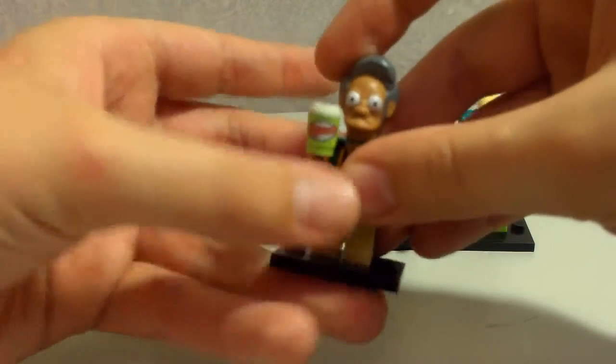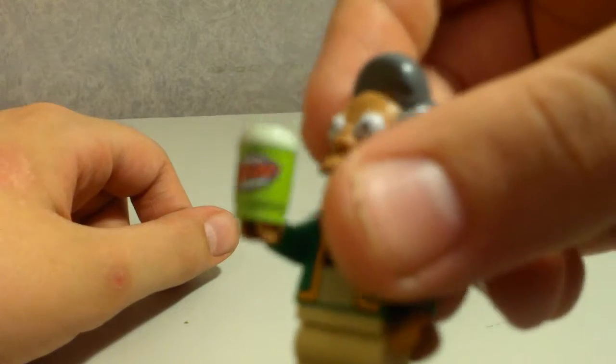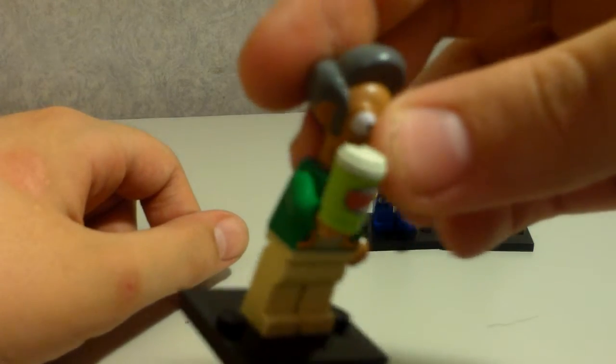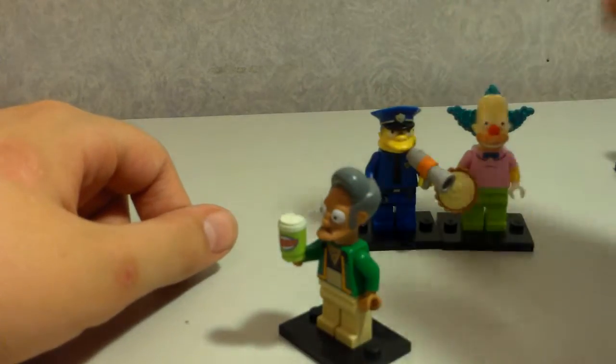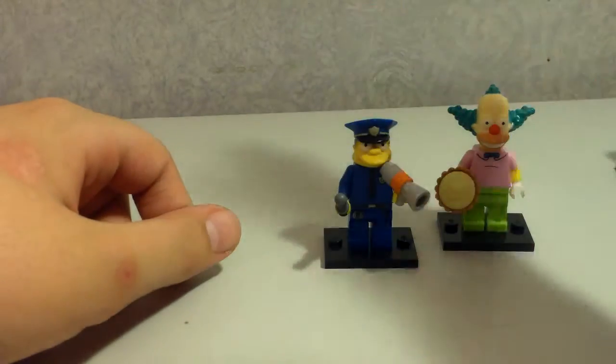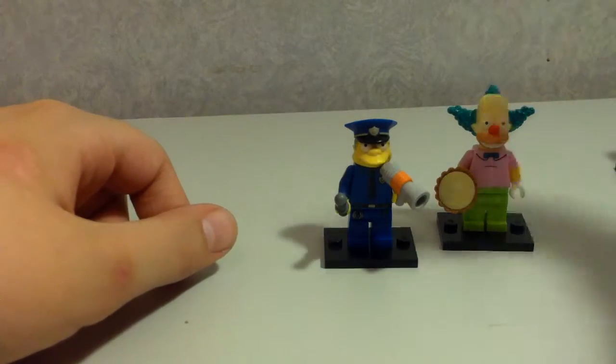We have Apu with a Squishee, which is a really cool accessory for him to come with. So yeah, probably one of my favorites from The Simpsons set. Yeah, very cool. I don't actually know which one is my favorite out of them all because they're all really good, but Apu is probably one of my favorites.